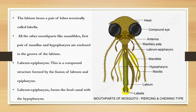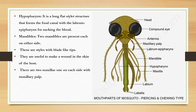The labrum-epipharynx forms the food canal together with the hypopharynx. The hypopharynx is a long, flat, stainless structure that forms the food canal with the labrum. This means it is used for sucking the food — for sucking blood. Two mandibles are present on each side.